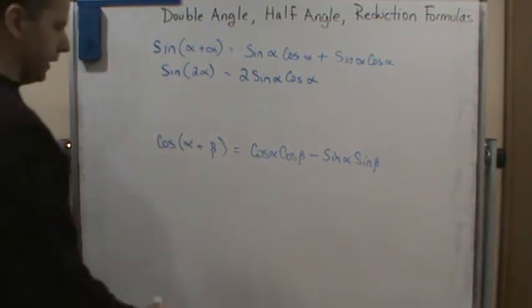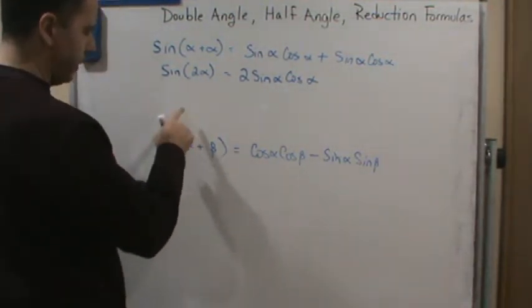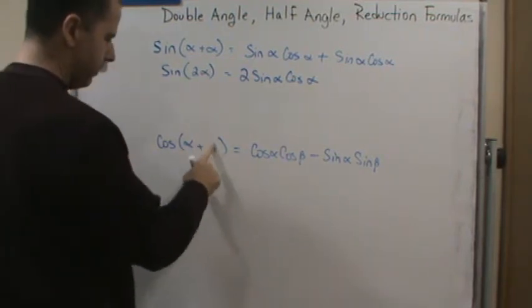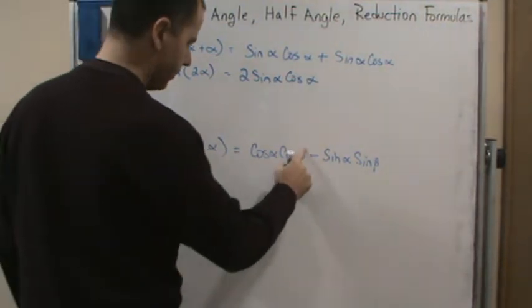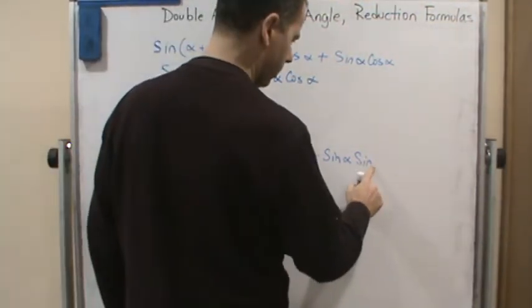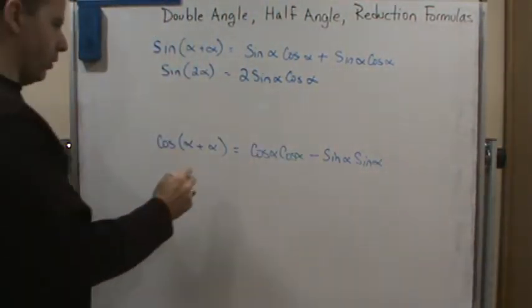And then similarly, we have this. And again, if we again have alpha equal to beta, we change this to alpha. We get alpha here. We get alpha here.